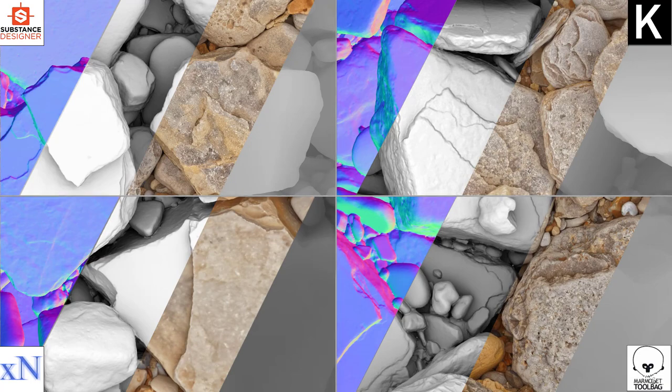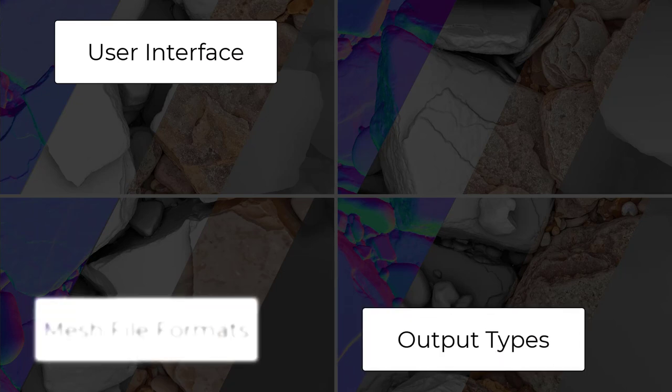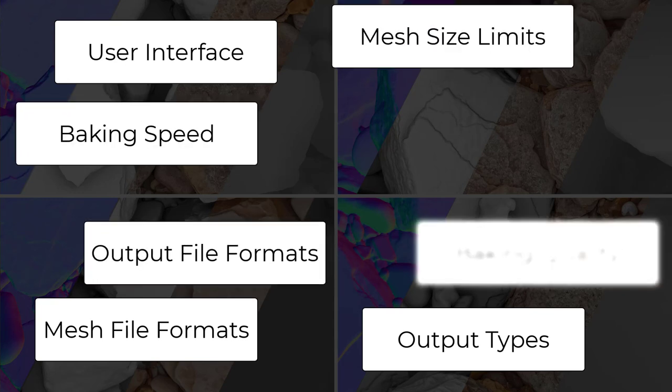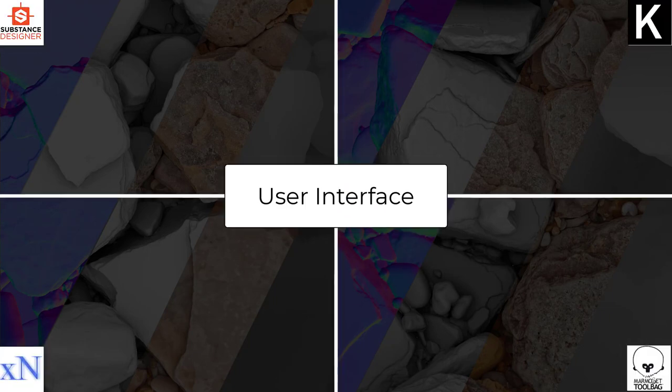Now let's pick everything together and compare pros and cons of each baker. The relevant comparison factors are: overall user interface and usability, types of output maps, supported mesh file formats, output file formats, mesh size limits, baking speed, baking quality, price, and additional functionality. The UI factor affects the entire setup process and feedback we get from the software, which in turn affects setup time and overall user experience.